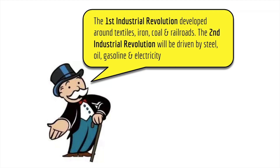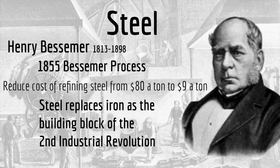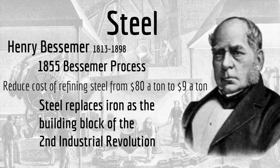The second industrial revolution will now begin to focus on steel rather than iron, and oil, gasoline, and electricity rather than coal and steam power. In terms of steel, the most famous person for steel production in the United States and the rest of the world is Henry Bessemer. In 1855, Bessemer develops a new process for producing steel. Steel had been around, but the process was slow, expensive, and inefficient. His Bessemer process produces better quality steel at a much lower cost — from $80 a ton down to $9 a ton.